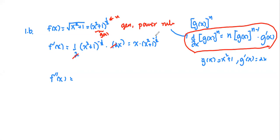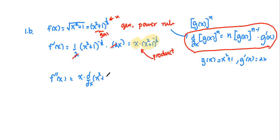To find the second derivative, we use the product rule. I'll highlight: this is one term and this is another term — the first and second functions. Based on the product rule, we get the first one multiplied by the derivative of the second one, plus the derivative of the first one multiplied by the second one. Now go ahead and simplify.